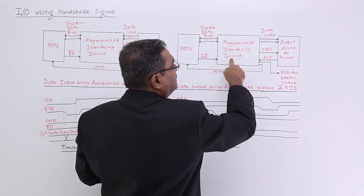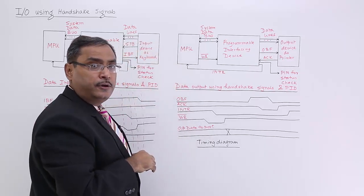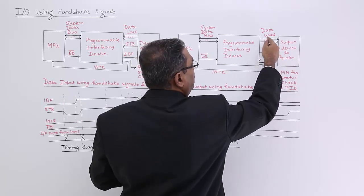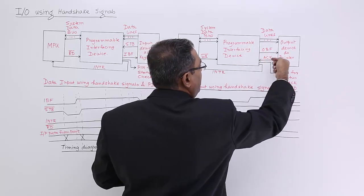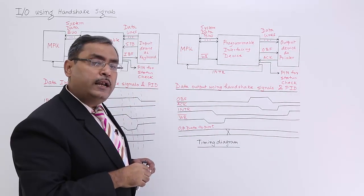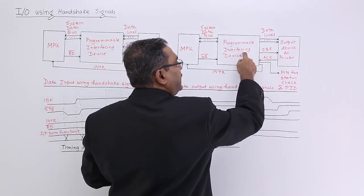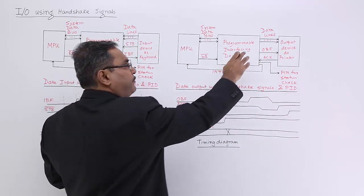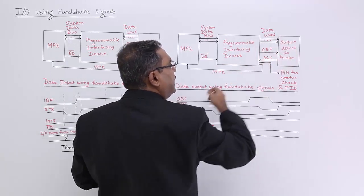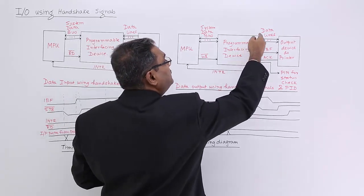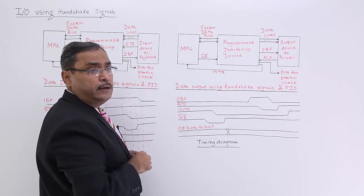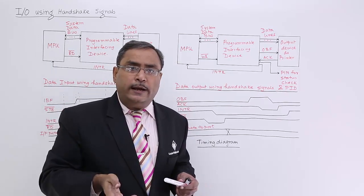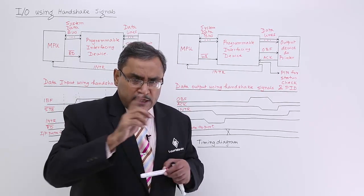The programmable interfacing device will then make the output buffer full line enabled, meaning: I have a byte, please print it. The output device — the printer — reads this data from the PID, making the ACK (acknowledgement) line enabled. The PID understands the output device is reading, so it makes the output buffer full line disabled. After reading the word completely, the ACK line becomes disabled, meaning the data has reached the printer for printing. The PID then makes the interrupt request line enabled again, indicating to the processor: I am idle, are you having something to print? This completes the cycle.